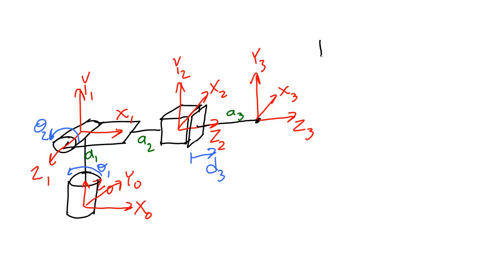Let's start with the first rotation, from frame zero to frame one. The first thing we do is try to figure out how we can rotate frame zero to get it to match frame one. We first look to see if there are any axes between these two frames that match. Here we see that axis x0 is in the same direction as axis x1.